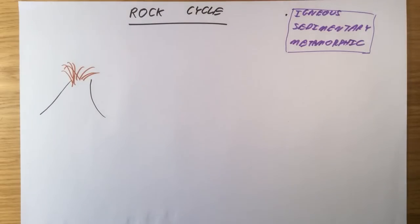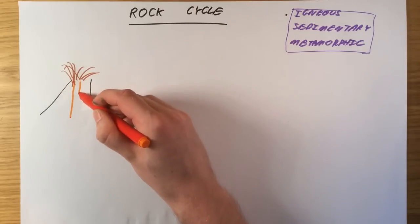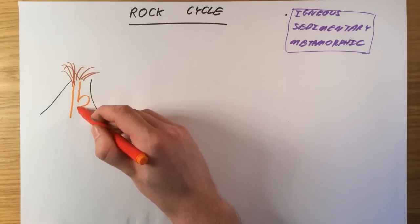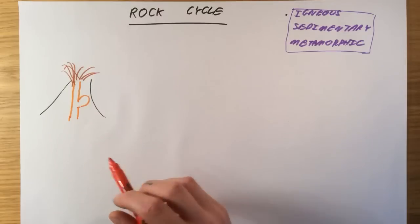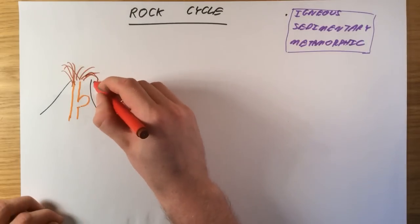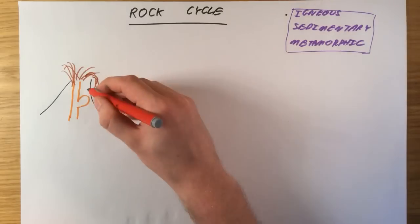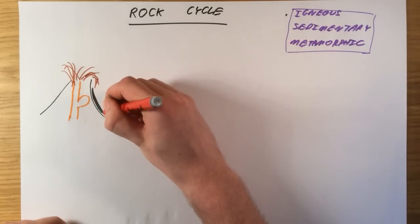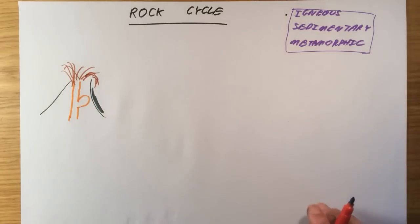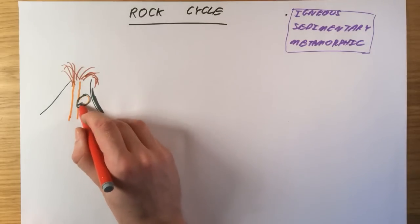And this lava originates from inside our volcanoes, and it's coming up from the Earth's mantle. So, as this lava erupts, it can solidify on the side of our volcano. It can also solidify inside the volcano, somewhere like this, which we call a magma chamber.